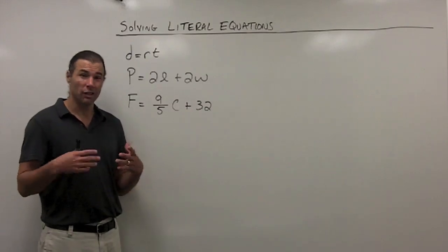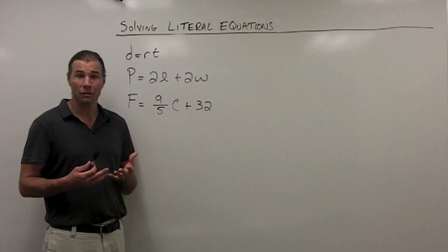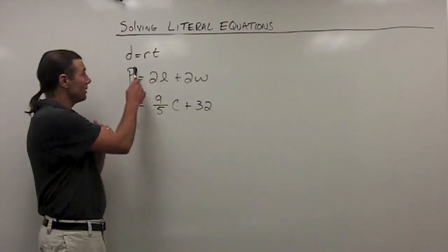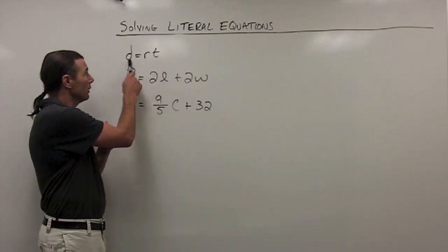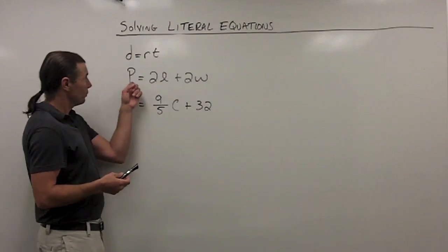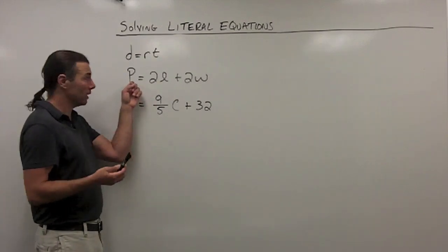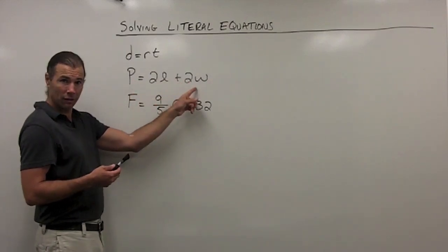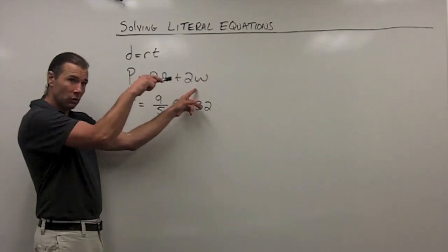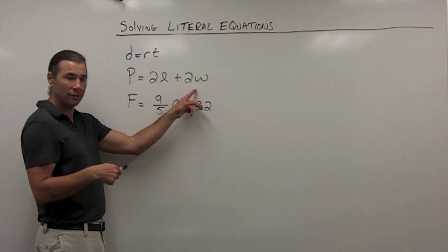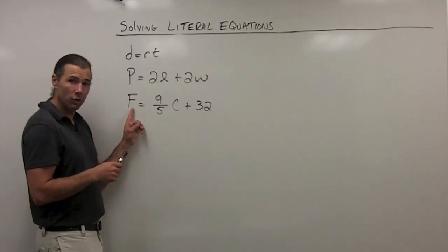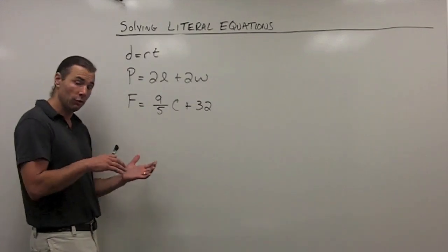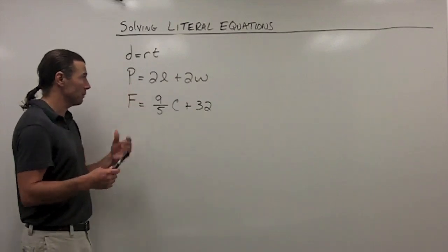We have formulas for common situations that keep arising in mathematics and science. I've written a couple formulas up on the board: D equals RT — distance equals rate times time — which is a formula for travel. This is a perimeter formula for a rectangle: perimeter equals twice the length plus twice the width. And here is a formula for converting between Fahrenheit and Celsius.